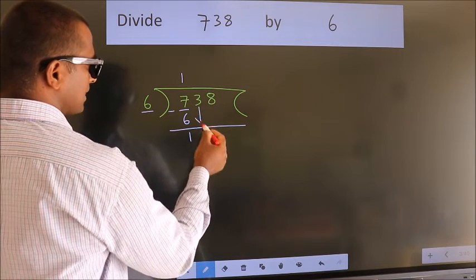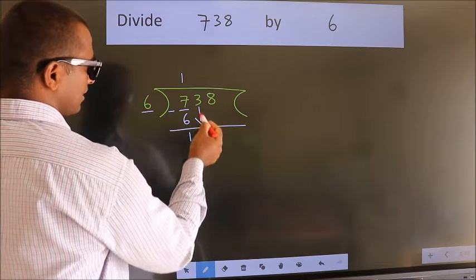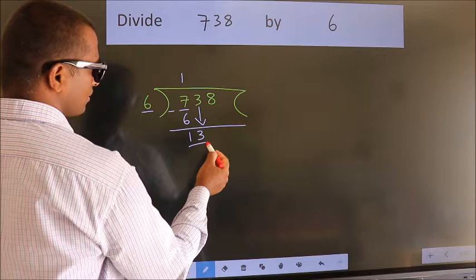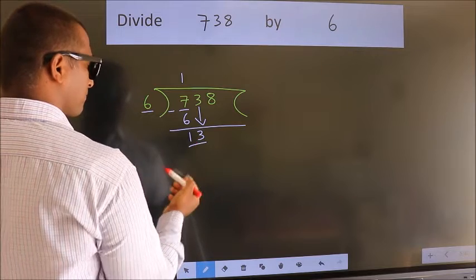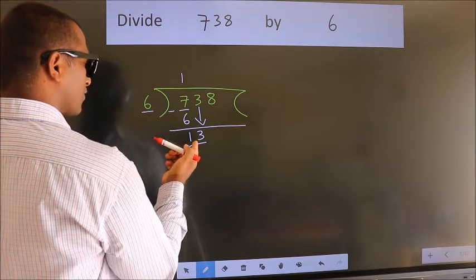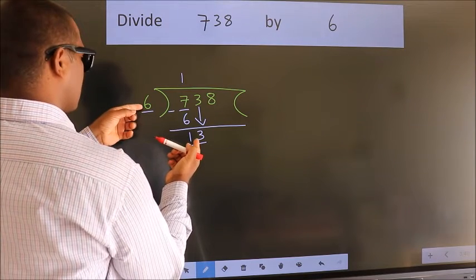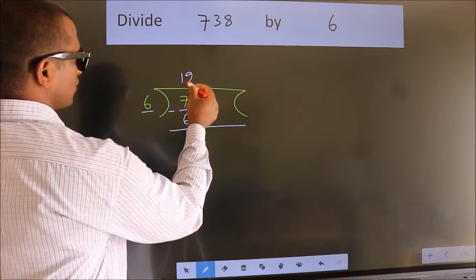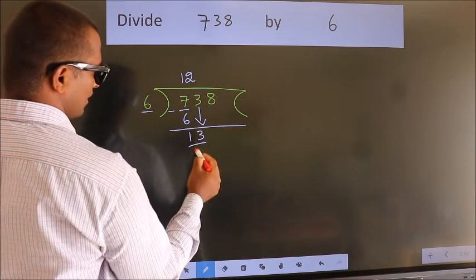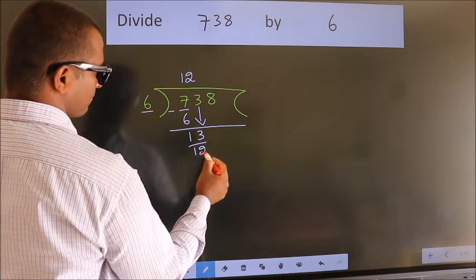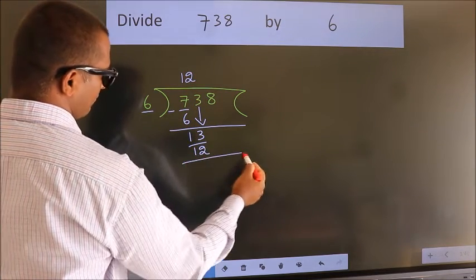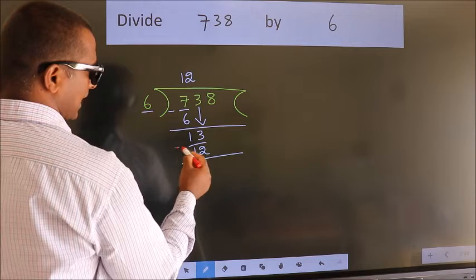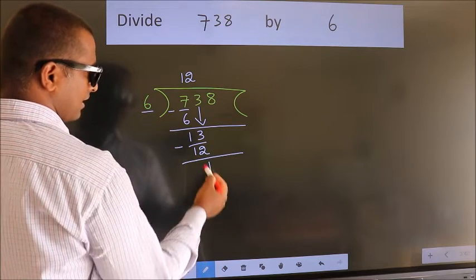After this, bring down the beside number. So, 3 down — so, 13. A number close to 13 in the 6 table is 6 twos 12. Now we subtract. We get 1.